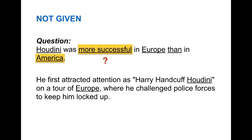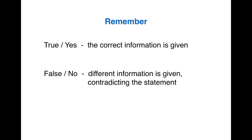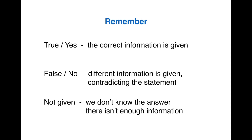Not-Given means we don't know because we just don't have enough information. To summarize: True or Yes is when the correct information is definitely given in the passage. False or No is when different information is given, contradicting the statement — the passage proves the statement is wrong. For Not-Given, we don't know the answer because there isn't enough information, or sometimes there isn't any information at all.